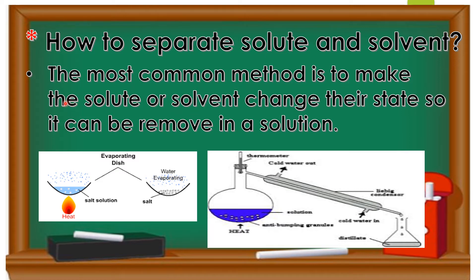The most common method is to make the solute or solvent change their state — whether solid, liquid, or gas — so it can be removed from the solution. One way is by applying heat or fire. For example, with a salt solution, we heat it so that the water evaporates and only the salt residue remains. This process is called distillation.